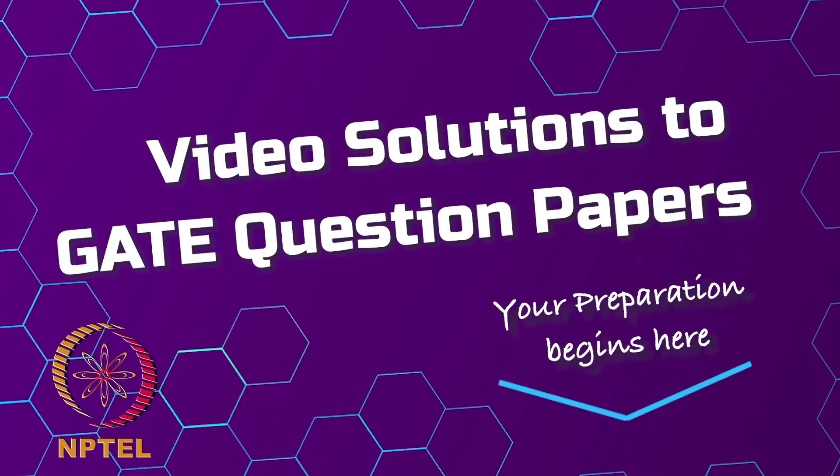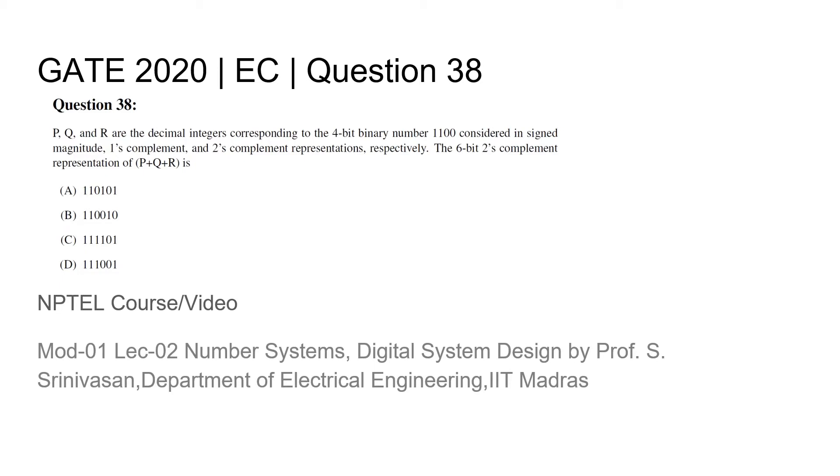This is the GATE 2020 EC paper where we are provided 3 decimal integers P, Q and R which correspond to the 4-bit binary number 1100 considered in sign magnitude, 1's complement and 2's complement representations.